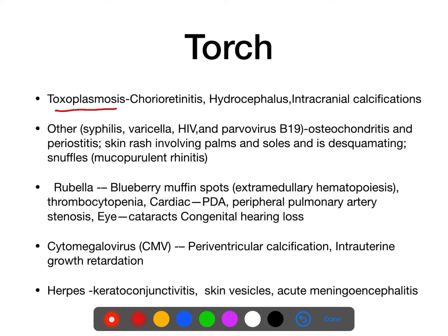TORCH infections: T is toxoplasmosis, O is others, R is rubella, C is cytomegalovirus, H is herpesvirus. Toxoplasma: they will have chorioretinitis, hydrocephalus, and intracranial calcification — specifically diffuse parenchymal calcification.